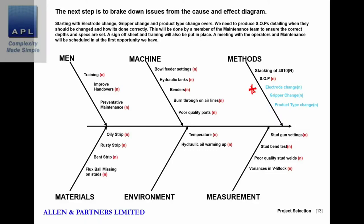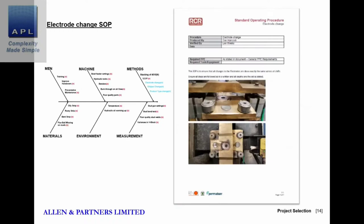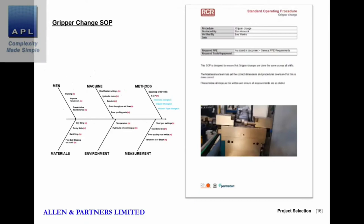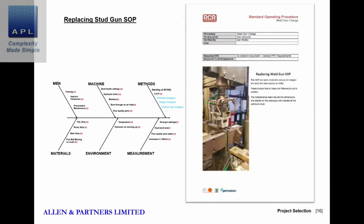Now they're looking at the machine. They're addressing electrode changes, gripper changes, and changing over the product type. You can see them writing standard operating procedures — this one is for the electrode changeover, this one is for the gripper changeover — coming up with standard ways of doing simple maintenance and machine setup. Replacing the stud gun is another one. Standard operating procedure, standard way of doing it: identify the variable, control the variable, and see what happens to the process.